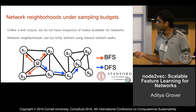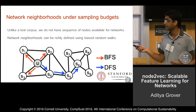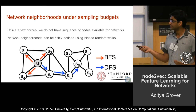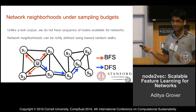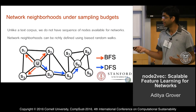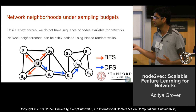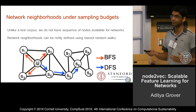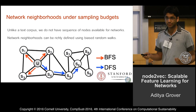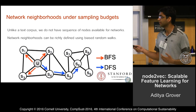This cartoon graph gives an illustration of why it's ambiguous to define a network neighborhood of a node. Given this node U, if I have a sampling budget of let's say three nodes, there are multiple ways in which I can sample its neighbors. In the most extreme case, I could do a breadth-first search where I just sample nodes that are at one hop away from node U.